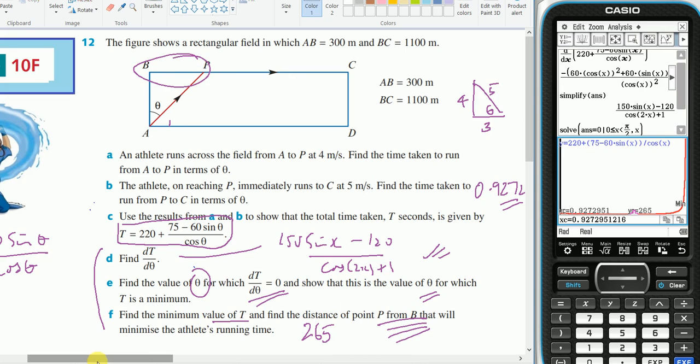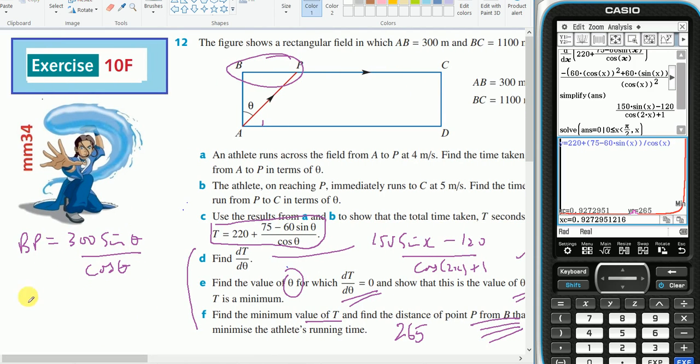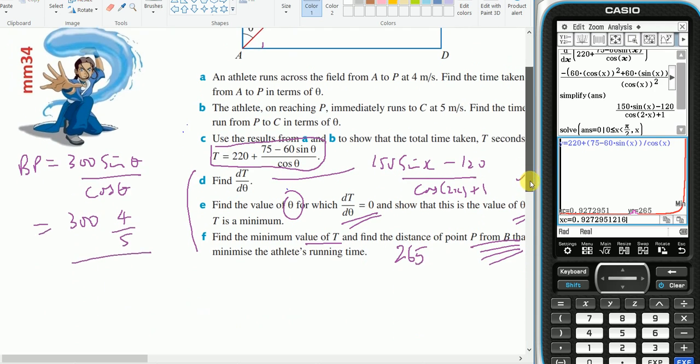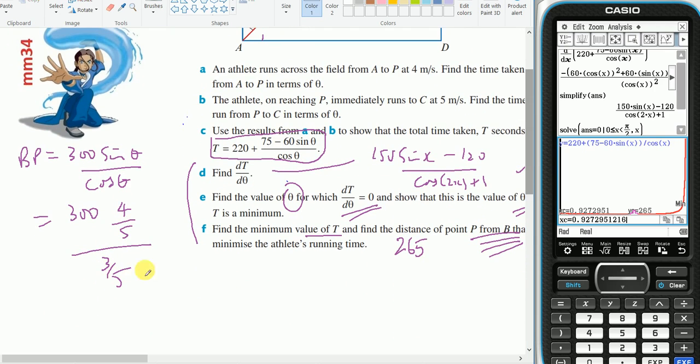So find the distance across there will be 300. I know that the sine of my angle will be 4 fifths divided by the cos of the angle will be 3 fifths.